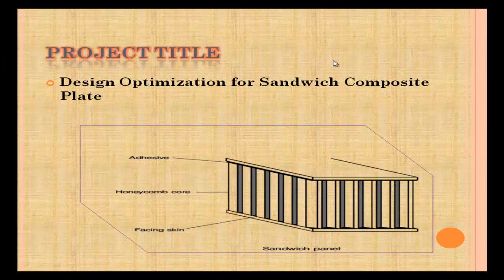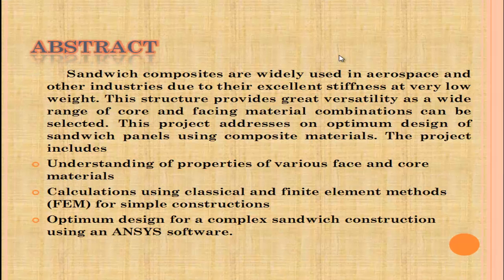Abstract: Sandwich composites are widely used in aerospace and other industries due to their excellent stiffness at very low weight. This structure provides great versatility as a wide range of core and facing material combinations can be selected. This project addresses optimum design of sandwich panels using composite materials, including understanding of product properties of various face and core materials, calculations using classical and finite element methods for simple constructions, and optimum design for complex sandwich constructions.